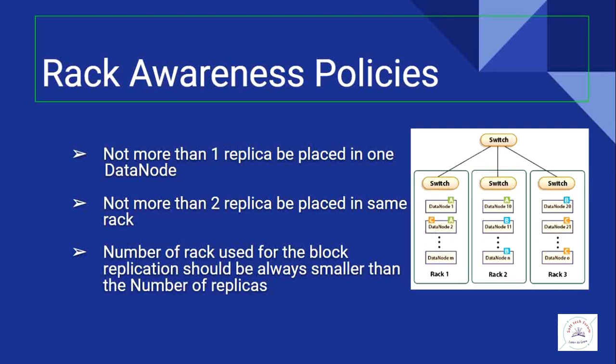What are the rack awareness policies? The first policy states you cannot keep more than one replica in one data node. Here you can see we have three blocks — block A, block B, block C — each with three replicas. You cannot keep two replicas in a single data node. If one data node goes down, two replicas would be lost. By spreading replicas across various data nodes in the same rack, if one data node goes down you still have another replica in the same rack.